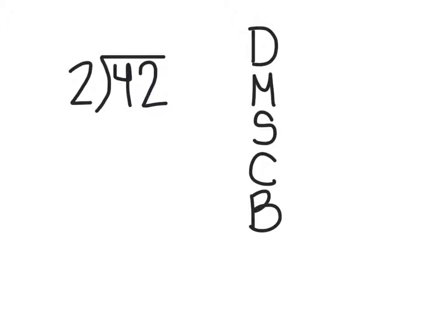Some of them use tallies, so we would skip count and we would say 2, 4. I can land right on 4. How many times did I skip count? 2 times.